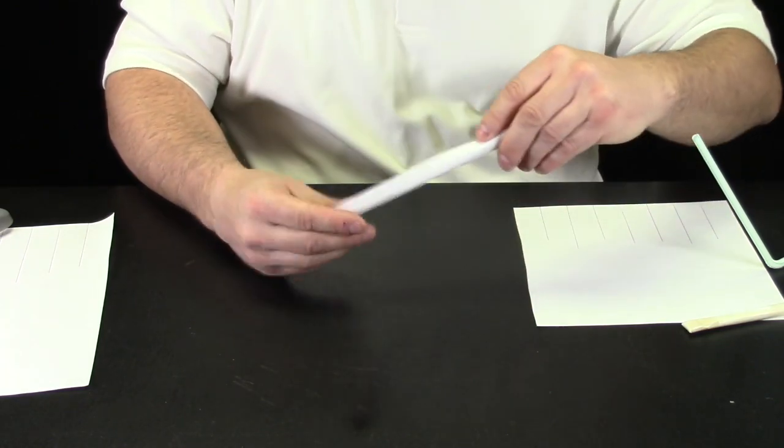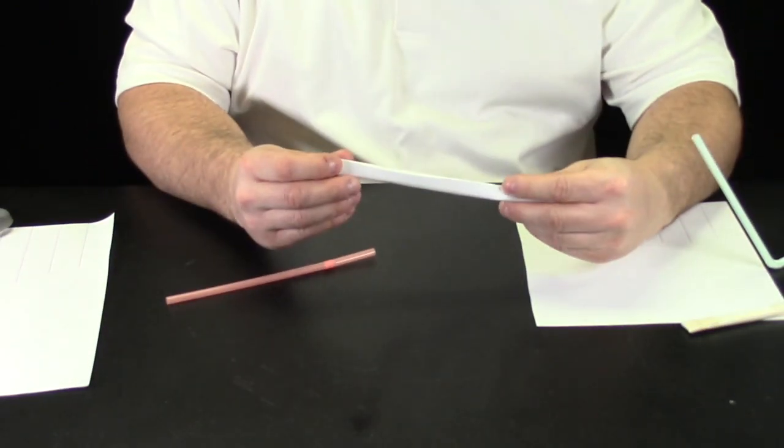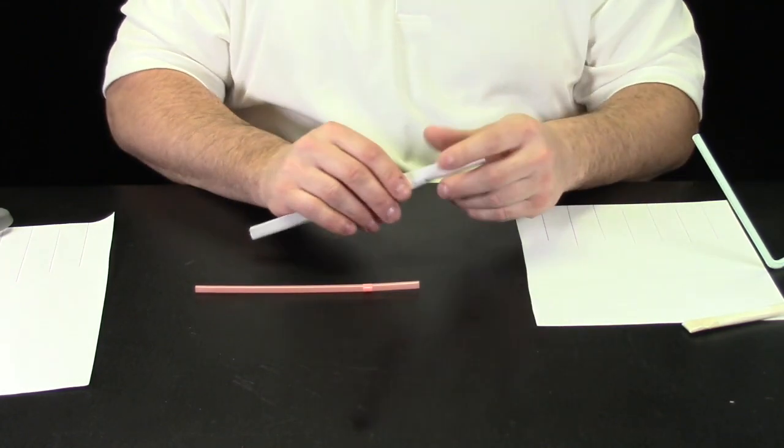Now all I have to do is tape that seam, pull out the straw, fold over the tip and I have a rocket that's ready to launch.